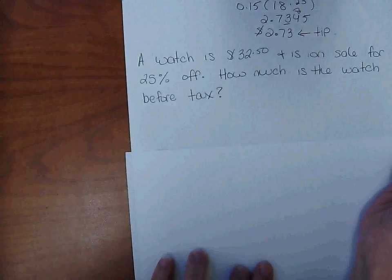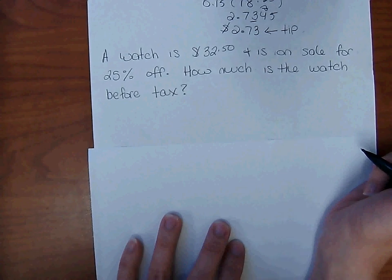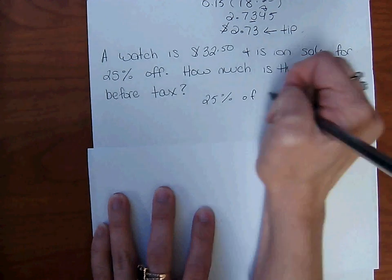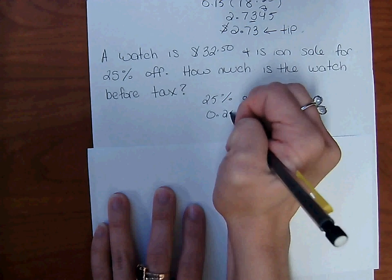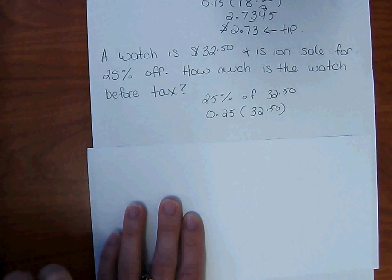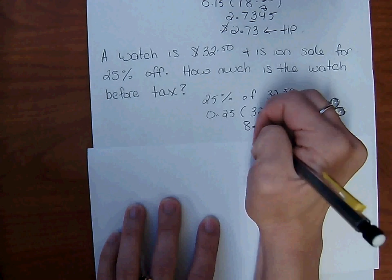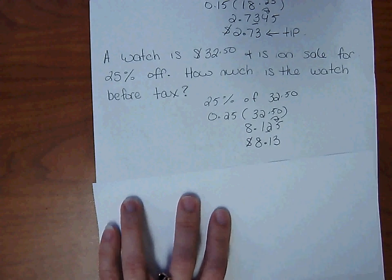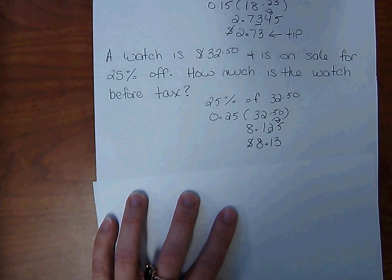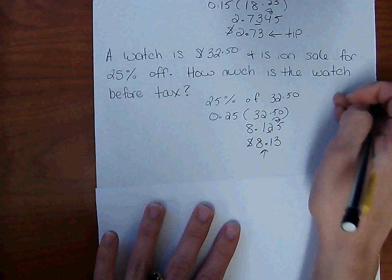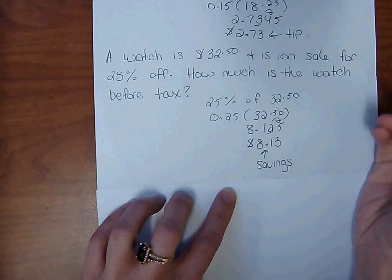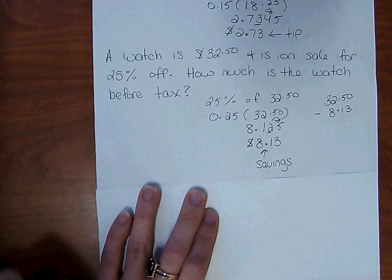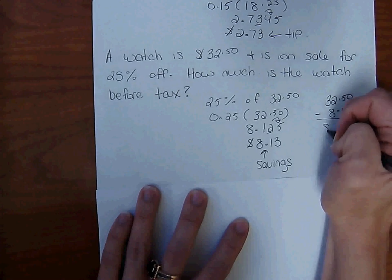A watch is $32.50 and it's on sale for 25% off. How much is the watch before tax? We have a discount, so we're going to take off 25%. That's 25% of $32.50 — change the percent to a decimal and multiply: 0.25 times $32.50. We get $8.125, which rounds to $8.13. But if we bring $8.13 to the register, the cashier will laugh at us — this is our savings, not the cost of the watch. To find what we need to bring to the register: $32.50 minus $8.13 equals $24.37.